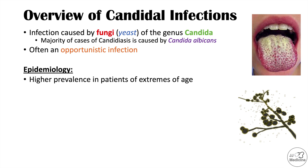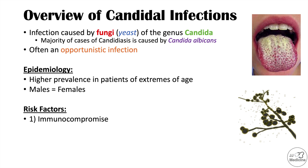With regards to prevalence of candida infections in general, there is no difference between males and females. As for risk factors, immunocompromise is by far one of the most important. This is an opportunistic infection that oftentimes occurs in patients with compromised immune system functioning.